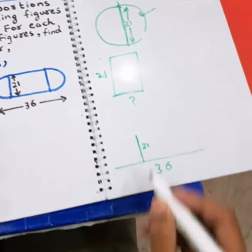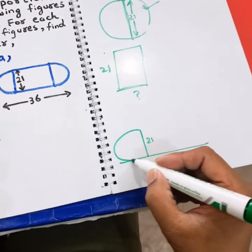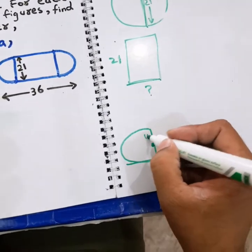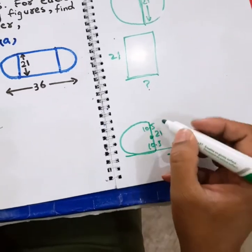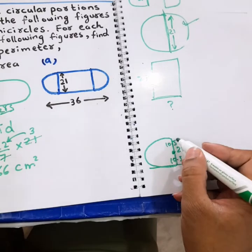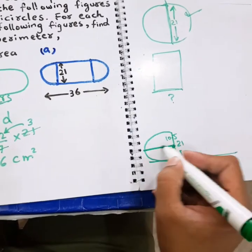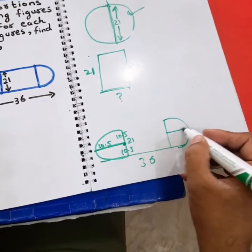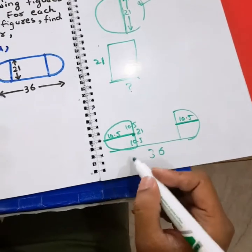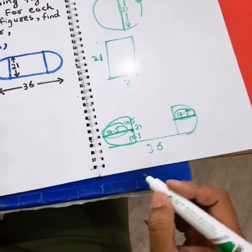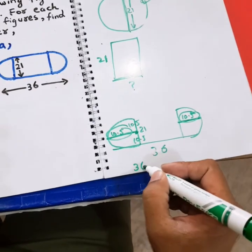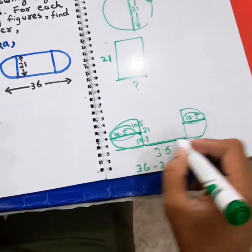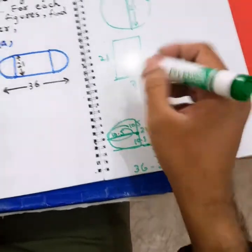A semicircle has been drawn from one side, with its midpoint at the center, making 10.5 above and 10.5 below — so 10.5 is the radius. Similarly on the other side, that length is also 10.5, and 10.5 plus 10.5 makes 21. So we subtract 21 from 36 to get the rectangle's length: 36 minus 21 equals 15.